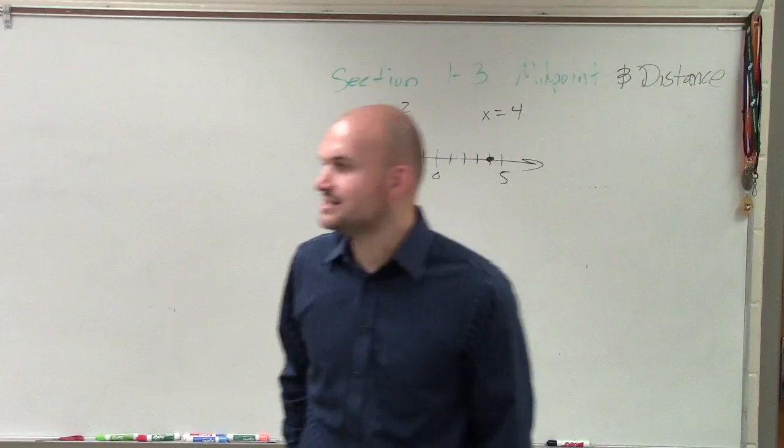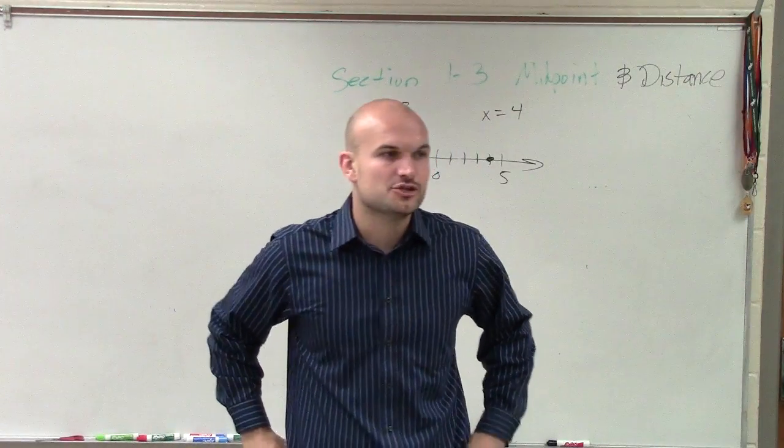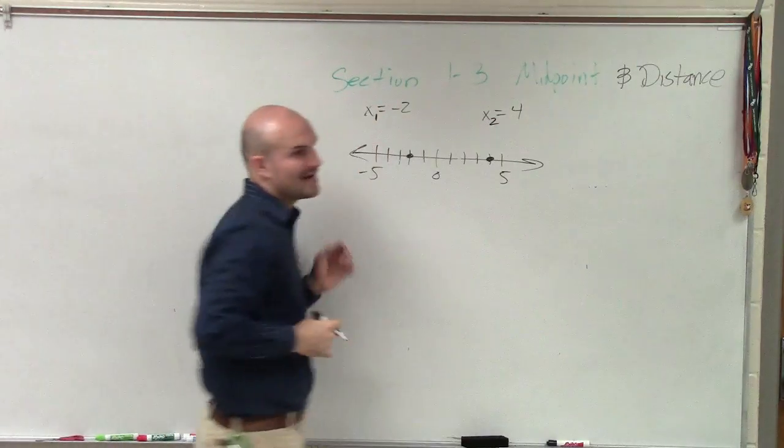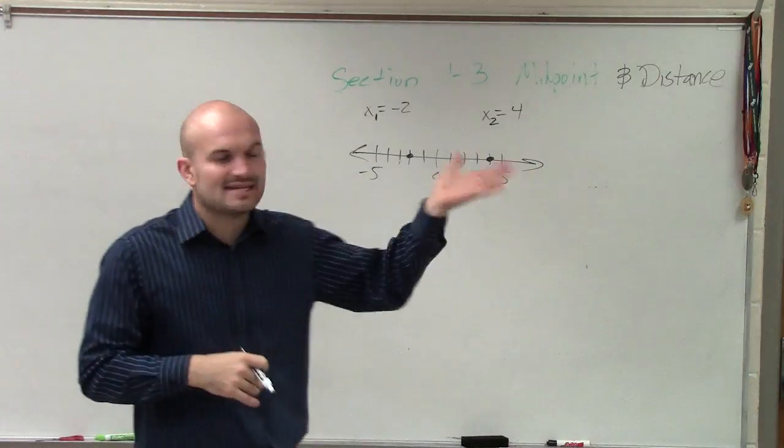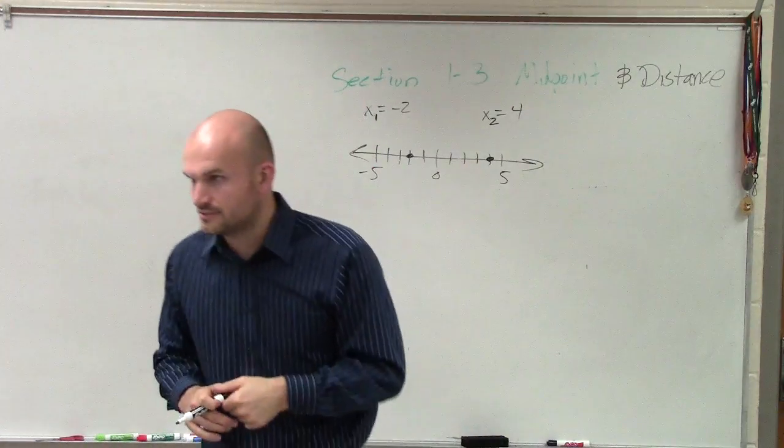Now, what though, the next thing is, what if I wanted to find the distance between these two points? Now, these are both x's, so what I'm going to do is I'm going to relabel them x1 and x2. Now, obviously, on a line graph, it's very easy just to count the tick marks between each point, right?